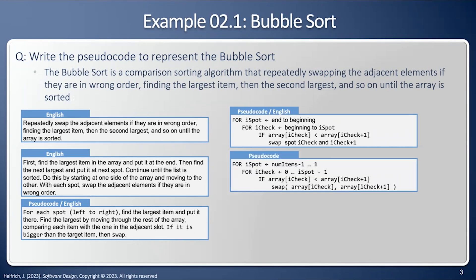One more iteration, and now I've worked out every detail. For I spot is number elements minus one to one. For I check is zero to I spot minus one. If they're in the wrong order, then swap them. Now we have all pseudocode keywords: for, for, if, we have the assignment, we have actual variable names, the actual equation, all the details have been worked out.